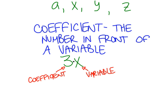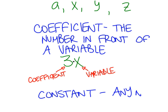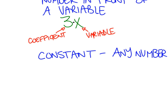The last vocab word for today is constant. The constant can just be any number — it can be a whole number, an integer, a fraction, a decimal, or even an irrational number, but it's a number. So if we add to what we had before, 3x plus 10, the 10 would be the constant.